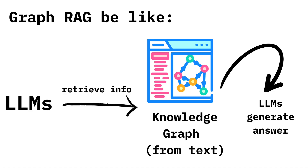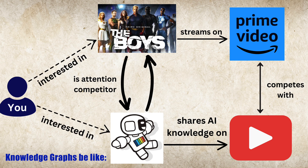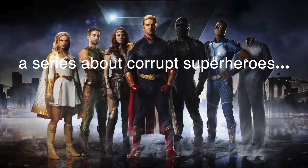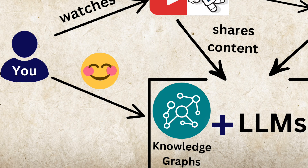If you're not sure what GraphRAG is, it is a system that allows LLMs to navigate and retrieve information from structured data and knowledge graphs — these are networks of entities connected by relationships. For example, if you were struggling to choose between our video about GraphRAG or the latest episode of The Boys Season 4, you're probably really into LLMs and knowledge graphs.